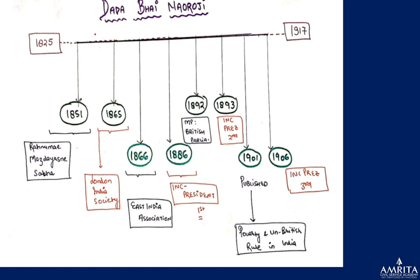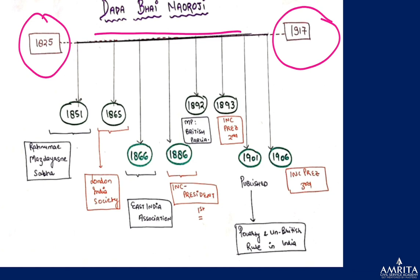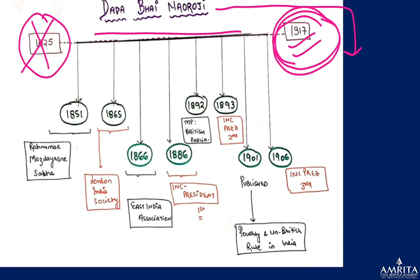The timeline of Dadabhai Naoroji is important. Regarding birth and death — it's not the birth itself but the death that's most relevant. He died around 1917, which means he had nothing to do with the Non-Cooperation Movement. While he was a mentor to Mahatma Gandhi, by the time Gandhi became very active in politics, Naoroji was no longer alive.